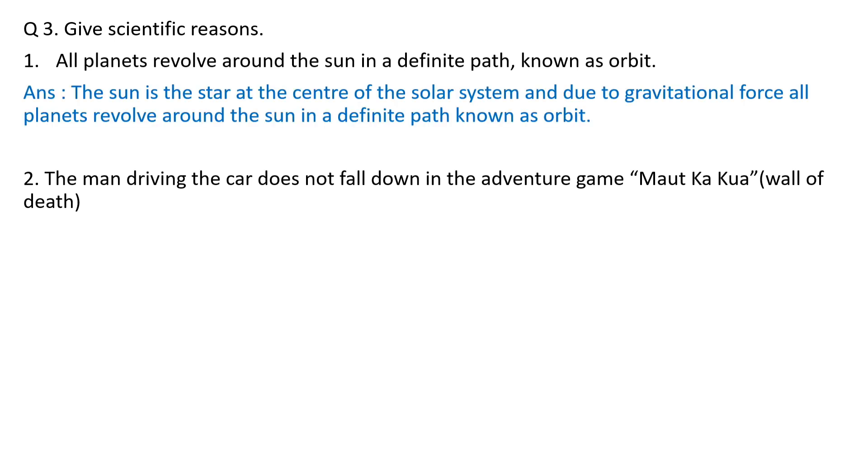The answer is: The sun is a star at the center of the solar system, and due to gravitational force all planets revolve around the sun in a definite path known as an orbit. Second: Why does the man driving the car not fall down in the adventure game called wall of death?